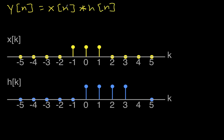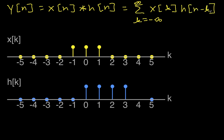This notation is actually misleading because it makes you think that the sample of y at time n depends only on the sample of x at time n and the sample of h at time n. In fact, the way it really works is it requires the entire set of samples of x and the entire set of samples of h. In particular, we're doing the summation from k going from minus infinity to infinity of x of k times h of n minus k. So we'll choose a particular value of n, figure out what this summation looks like, and that will give us y of n.